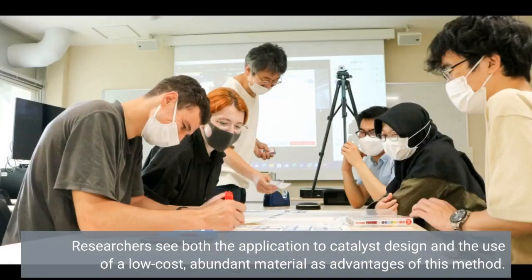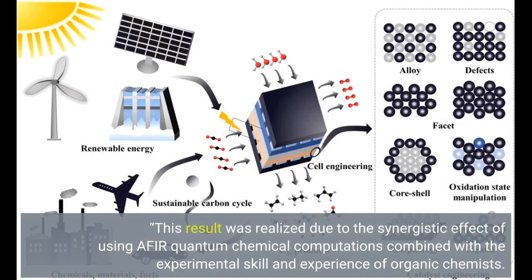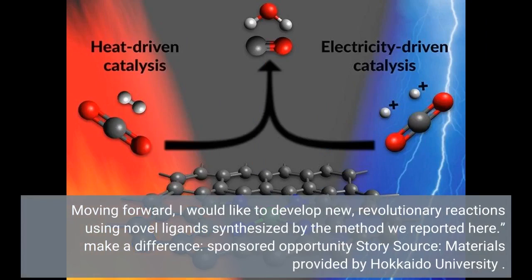Researchers see both the application to catalyst design and the use of a low-cost, abundant material as advantages of this method. "We succeeded in synthesizing DPPE derivatives that are useful as ligands for transition metal catalysts, and we did this using cheap, readily available ethylene," said lead author Hideaki Takano. "This result was realized due to the synergistic effect of using AFIR quantum chemical computations combined with the experimental skill and experience of organic chemists. Moving forward, I would like to develop new, revolutionary reactions using novel ligands synthesized by the method we reported here."